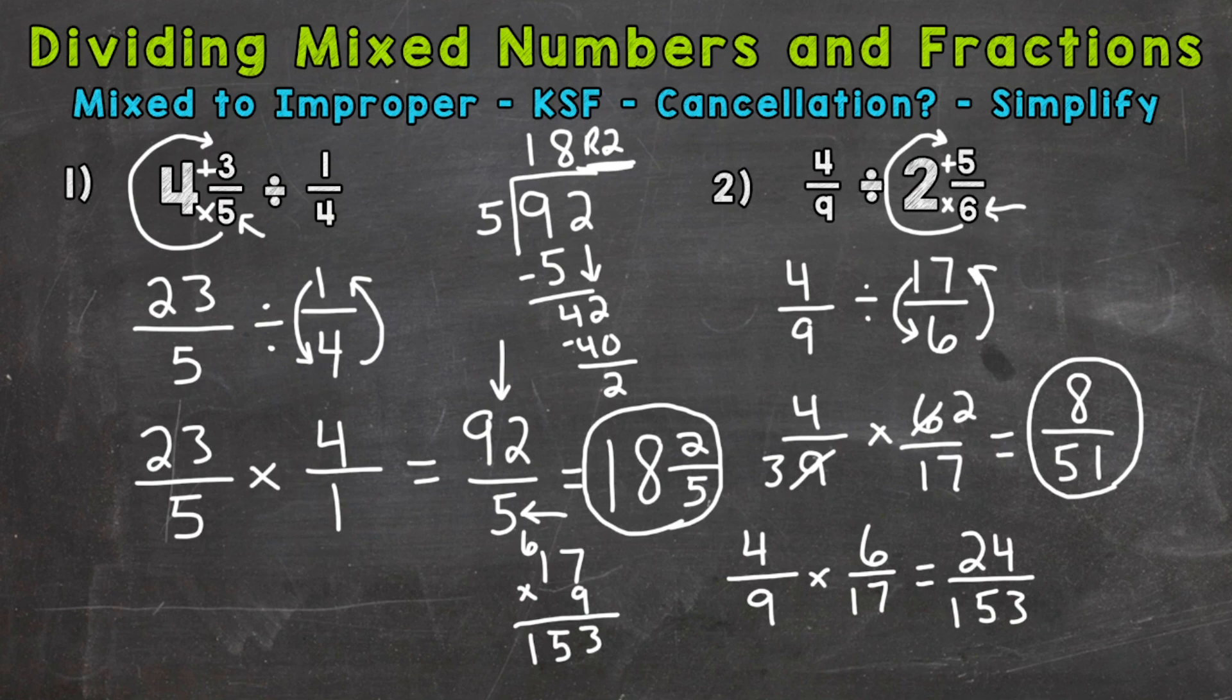But we are able to simplify that fraction. 24 and 153, they have a common factor of 3, a greatest common factor of 3. So divide them both by 3 here. And we do end up with 8 over 51. So we got the same answer.